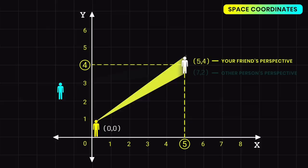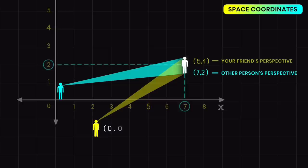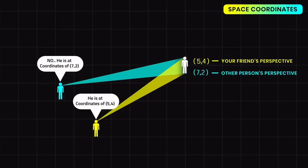Your friend and others get different coordinates for your position even though you are not moving. Your position is the same for you but not the same for all observers. This is called relativity — position is relative.